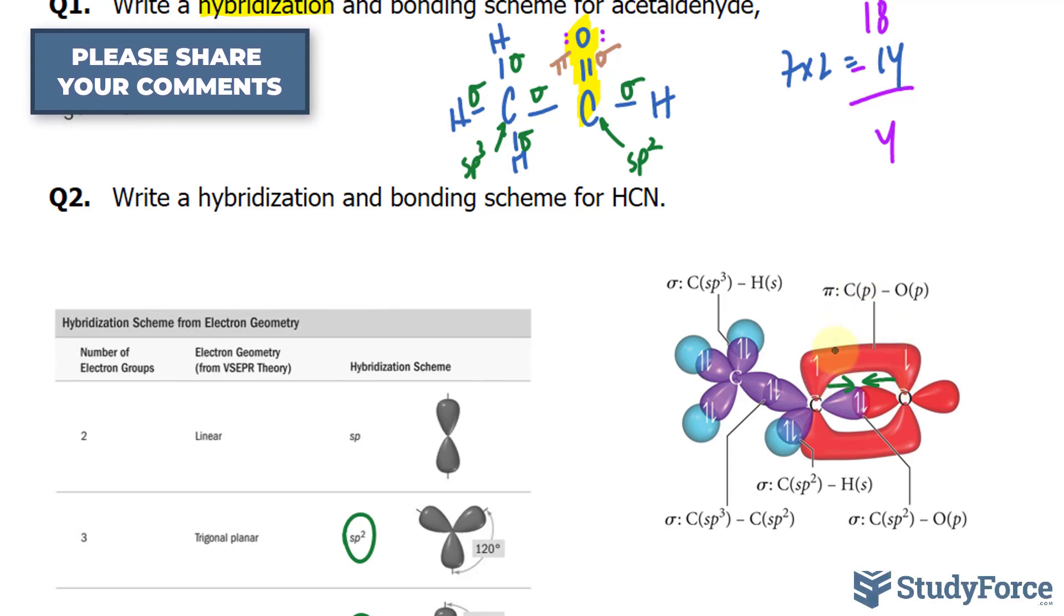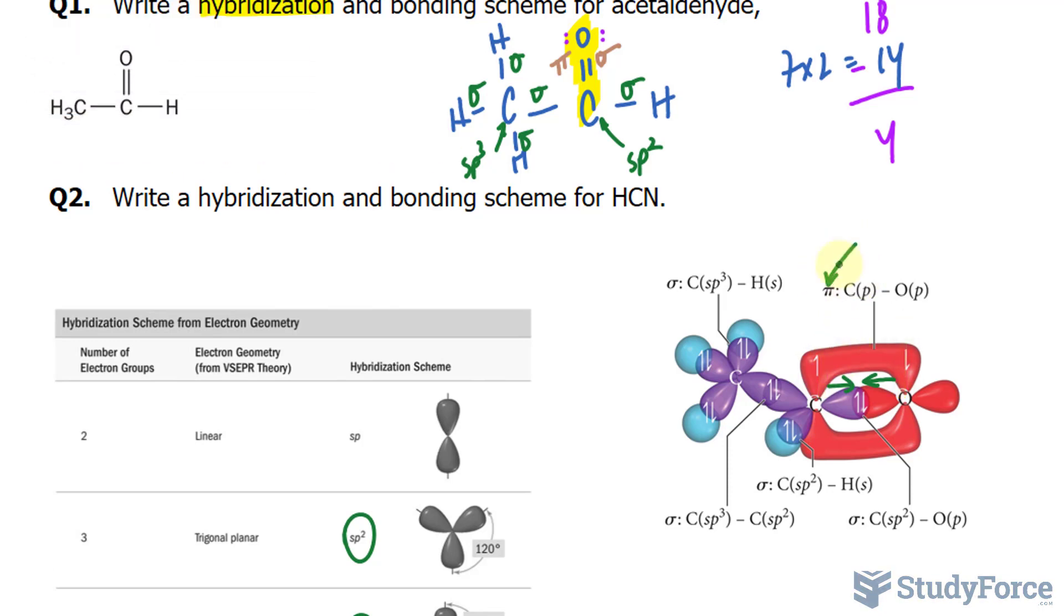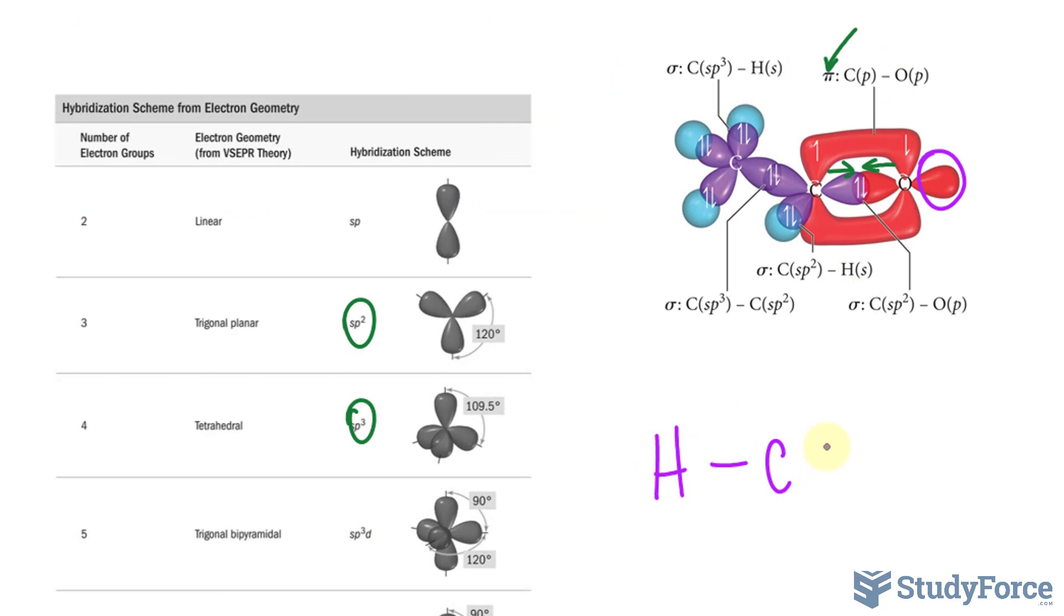For question two, we're asked, write a hybridization and bonding scheme for HCN. HCN is the chemical formula for hydrogen cyanide. And it has a Lewis structure that looks like this, H, C, and N.